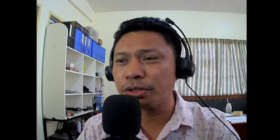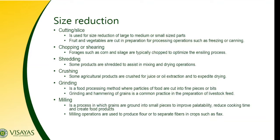The other major post-harvest operation is size reduction. For size reduction, one activity is cutting or slicing, which is used for reducing large products to medium or small size parts. For example, potatoes are sliced into the exact standard size for making french fries, making them ready to cook or fry. Fruits and vegetables are cut in preparation for processing operations such as freezing or canning.